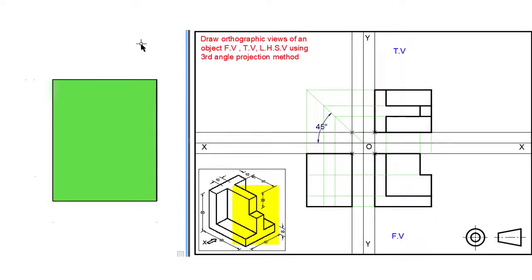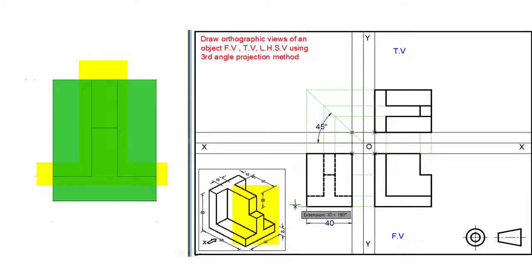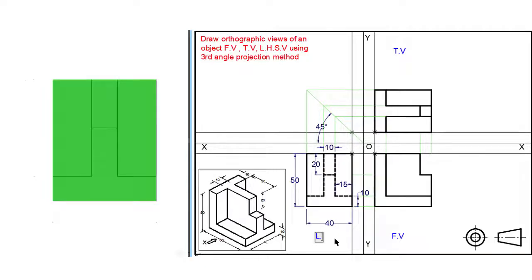The edges which are not visible from the left hand side view will be drawn with the help of hidden lines as shown. Now our left hand side view is completed. Let me show you the dimensions of this view so that you can draw it easily. Also mention the name of the view, which is left hand side view.